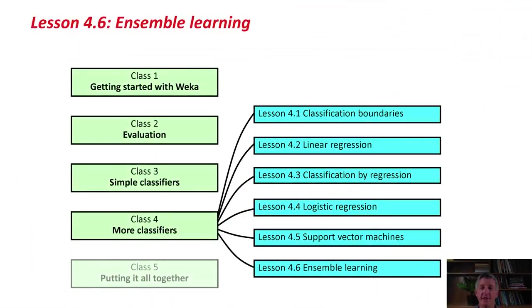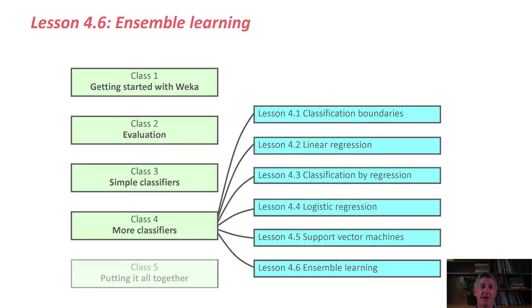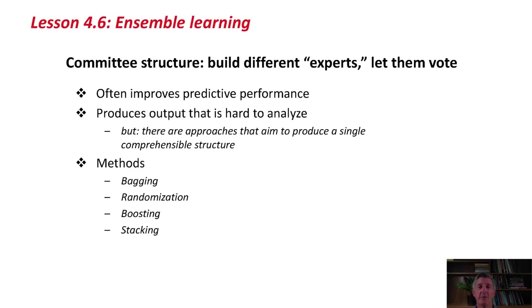Welcome to Lesson 4.6 on Ensemble Learning. In real life, when we have important decisions to make, we often choose to make them using a committee. Having different experts sitting down together with different perspectives on the problem and letting them vote is often a very effective and robust way of making good decisions.